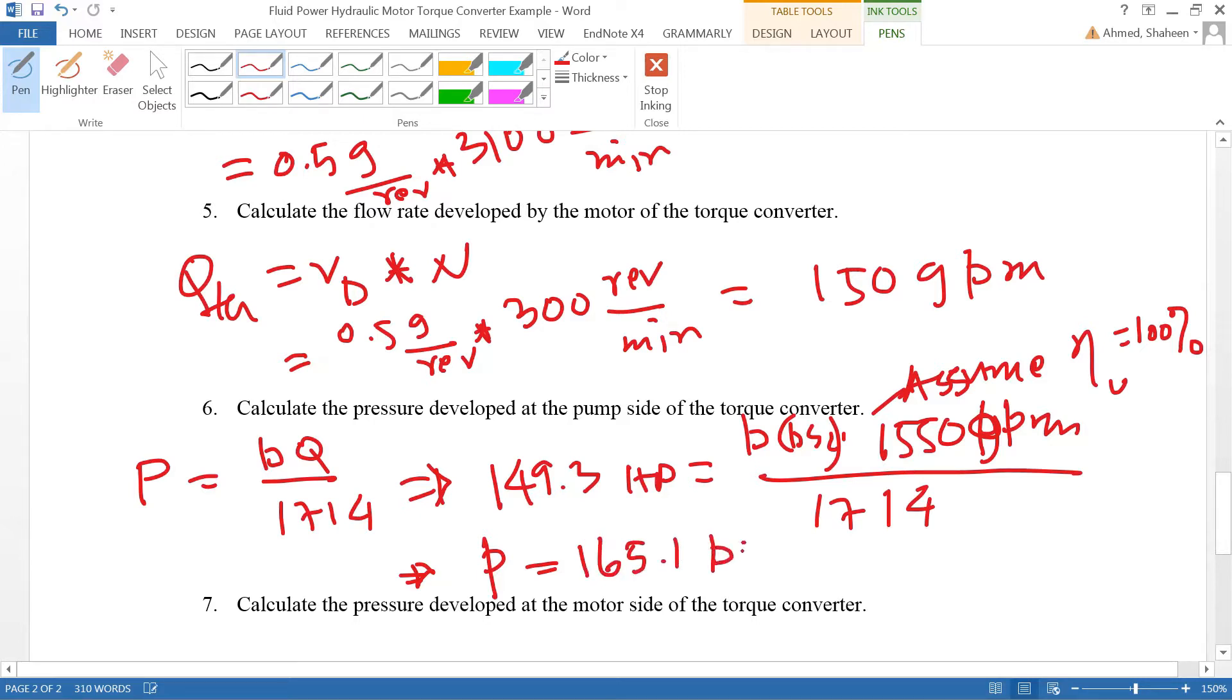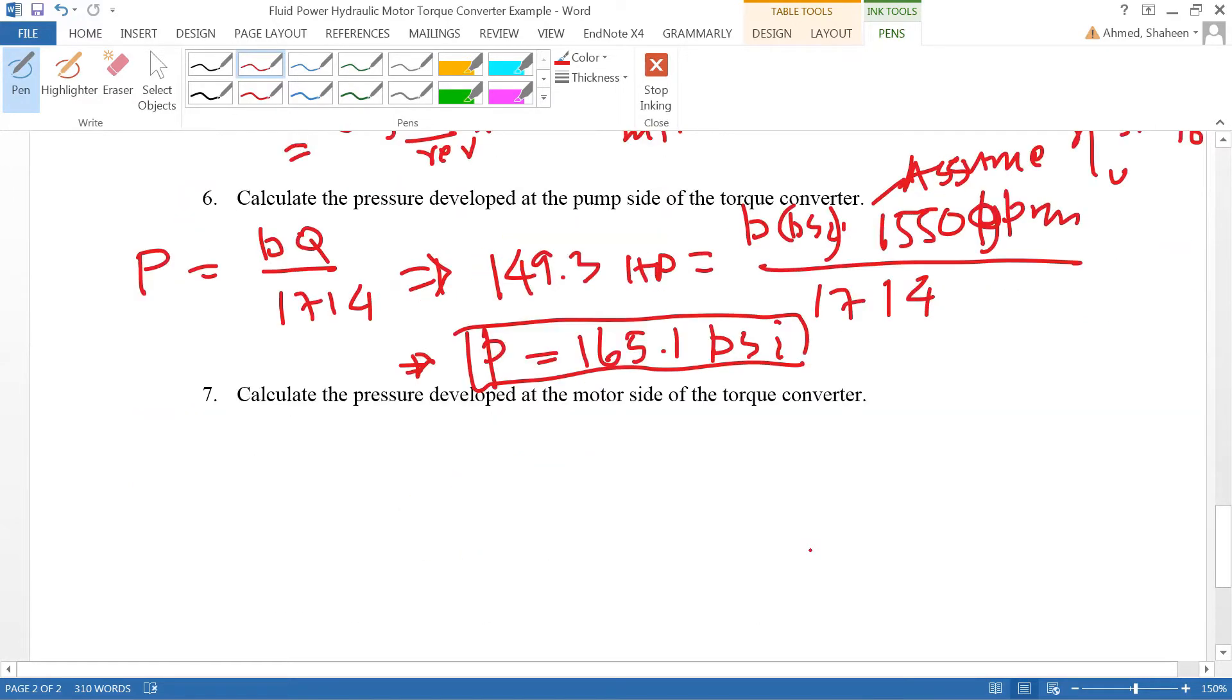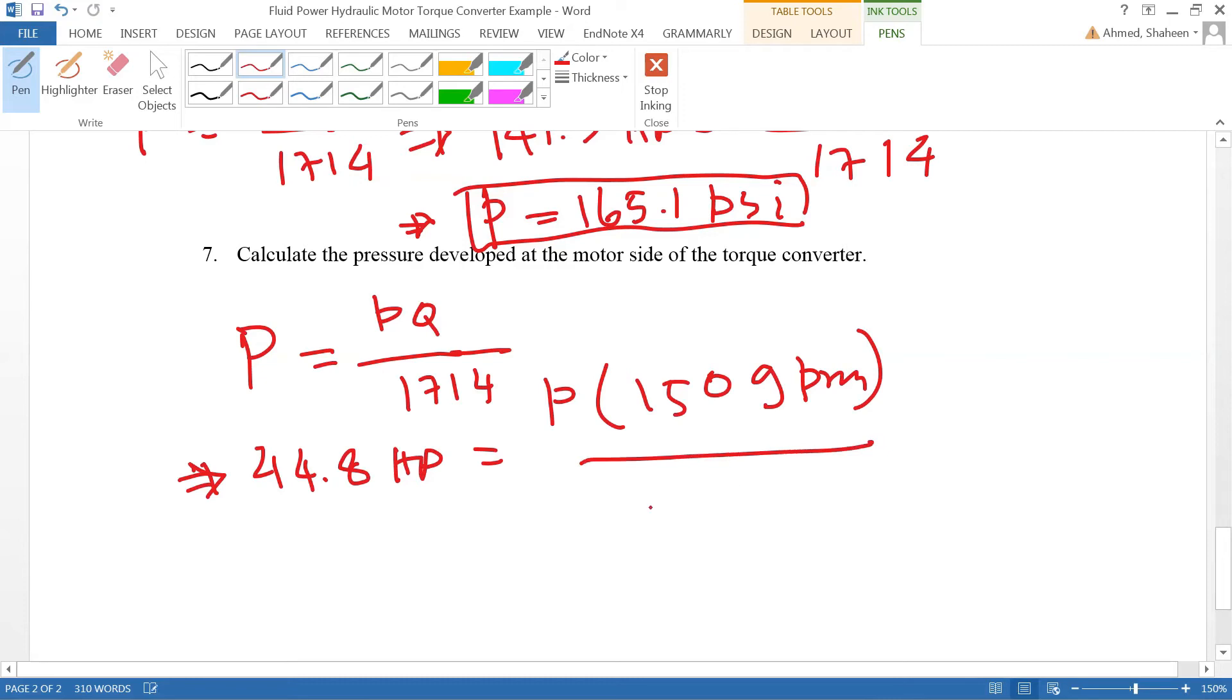Now calculate the pressure developed at the motor side of the torque converter. Same thing, at the motor side I have less power because motor is losing efficiency. Motor side I don't have that much power, that was calculated 44.8 horsepower times P. The flow rate of the motor is 150 gallon per minute I calculated before, divided by 1714.